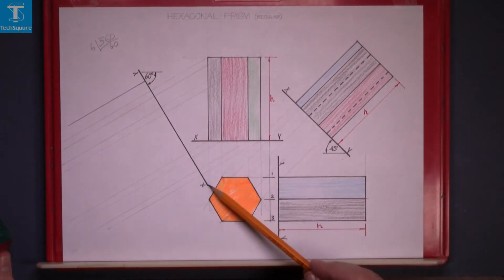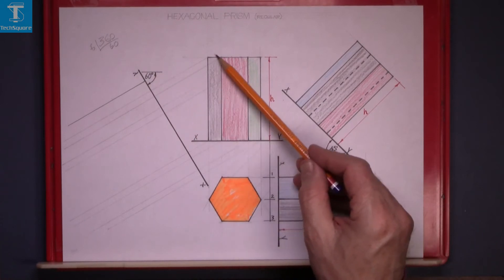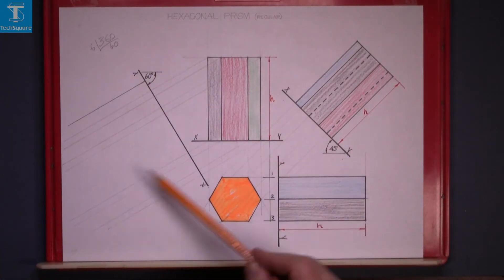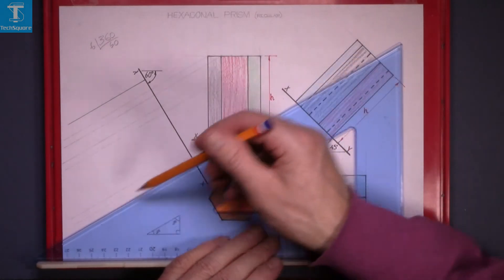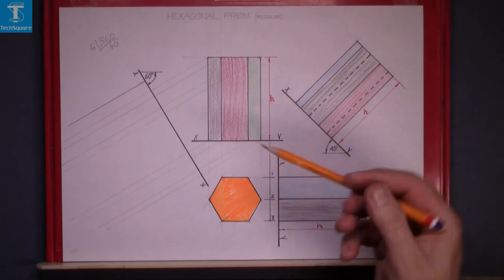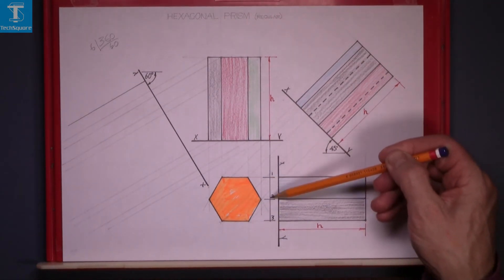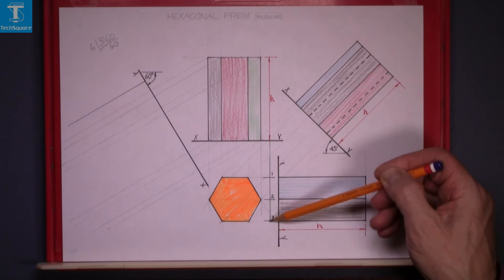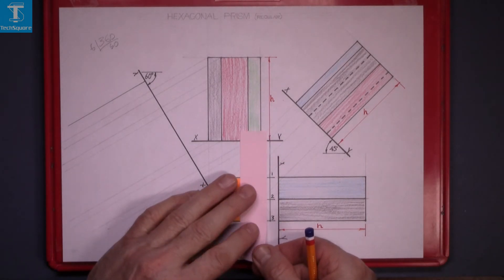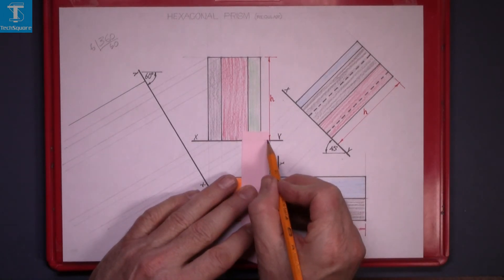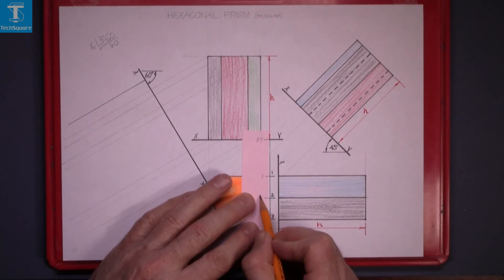Now we're given this XY line and we are asked to project from the elevation — project down from this view here. That's the way we draw the lines down, at 30 degrees. The distances we take now are the distances in the plan — so these distances here. We step them off on a piece of paper; it's the handiest way. Mark the XY line here and points 1, 2, and 3.